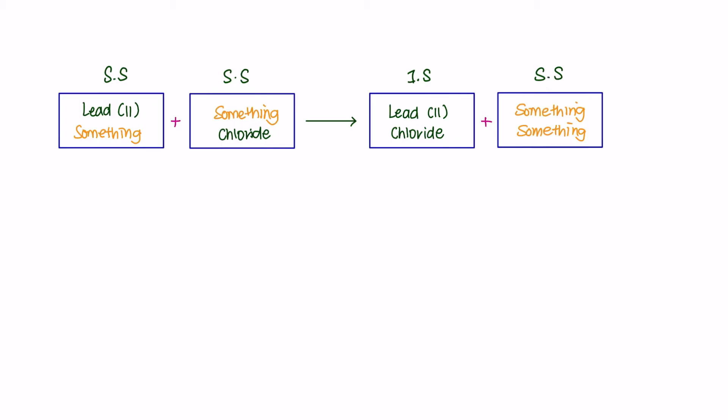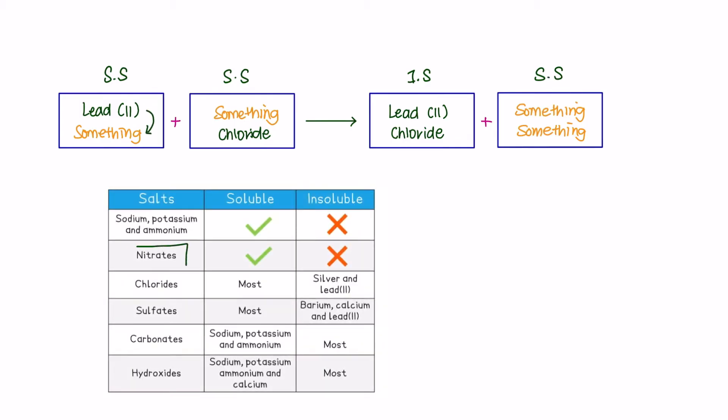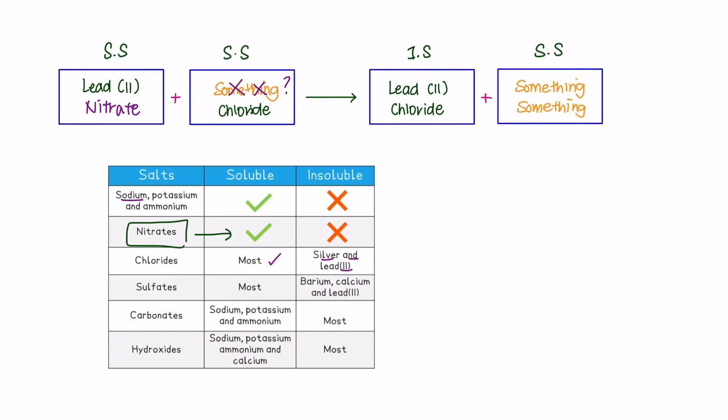In order to do this, you must be familiar with your solubility rules. In your solubility table, you will learn that all nitrates are soluble, so a safe choice would be lead nitrate. Now we need to find something for chloride. Almost all chlorides are soluble except silver and lead. We know that sodium, potassium, and ammonium salts are always soluble, so we can use any one of these. I'm going to use sodium. We've got lead nitrate and sodium chloride.